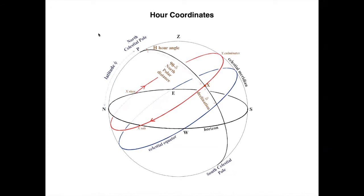So this defines the hour coordinate system. In the hour coordinate system the fundamental plane is still the celestial equator. One of the coordinates is the declination of the star. The difference is that the other quantity, instead of being right ascension, is the hour angle.